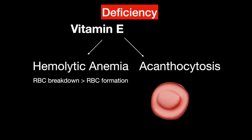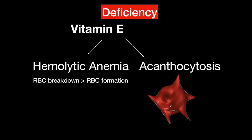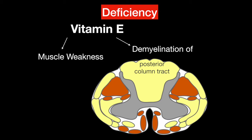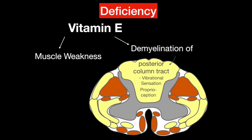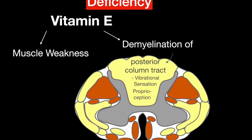Acanthocytosis can develop, in which red blood cells get spur-like projections. Muscle weakness and demyelination of the spinal cord's posterior column tracts can also be present.